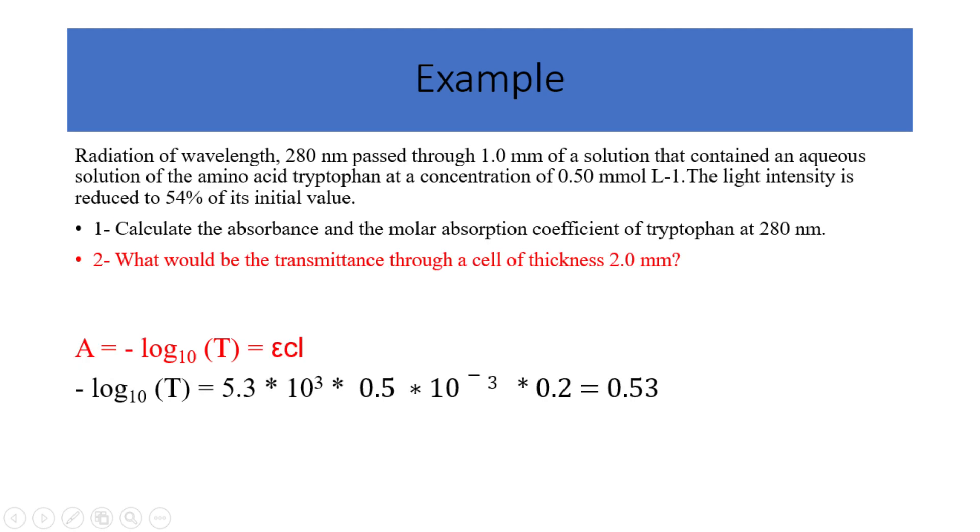2. What would be the transmittance through a cell of thickness 2.0 millimeters? So, we know that A equals negative logarithm base 10 of T and equals epsilon times C times L. A is equal to 5.3 times 10 to the power of 3 multiplied by 0.5 times 10 to the power of negative 3 multiplied by 0.2. So, A equals 0.53.